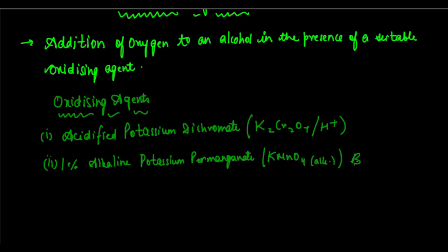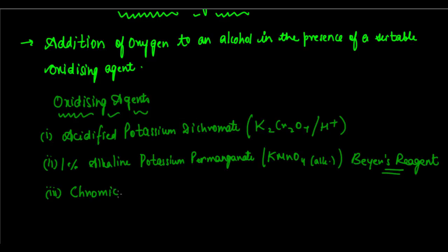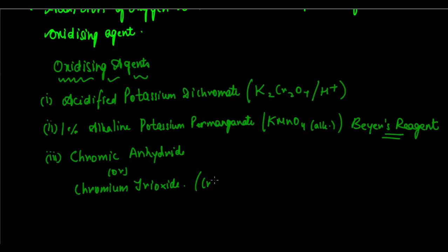The last oxidizing agent in our course is chromic anhydride, otherwise known as chromium trioxide, formula CrO3. So these are the three oxidizing agents.